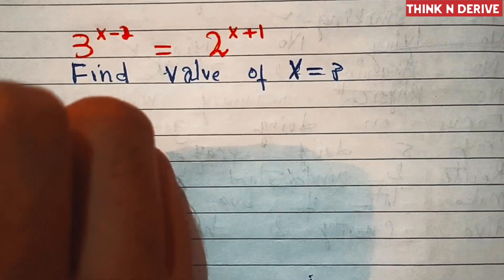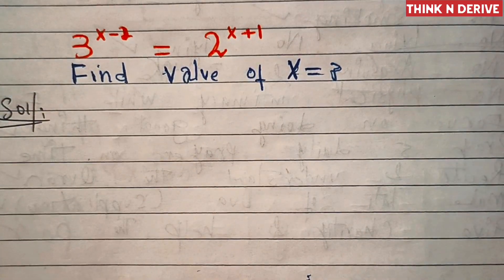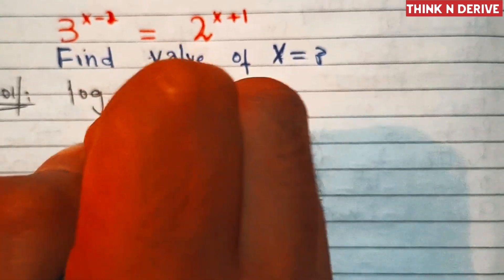So let's start. First of all, we will apply the log on both sides, so it's log 3 power x minus 2 equal to log of 2 power x plus 1.